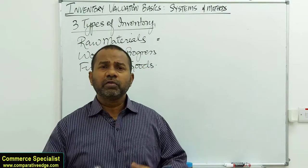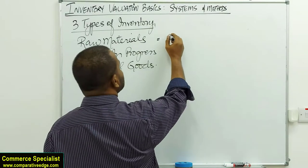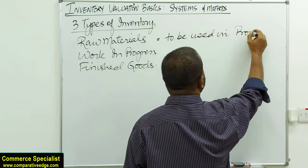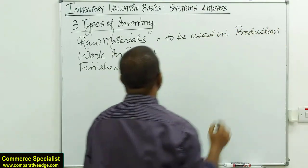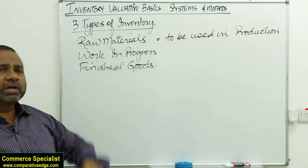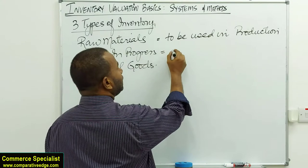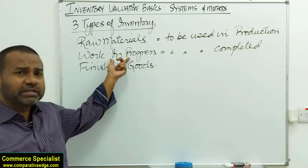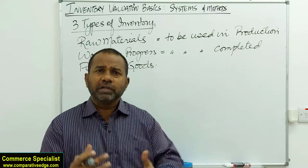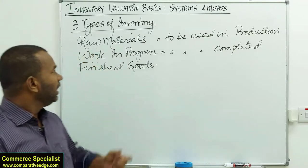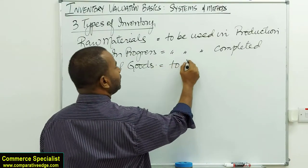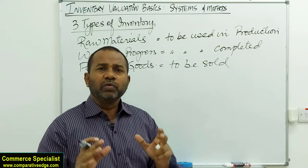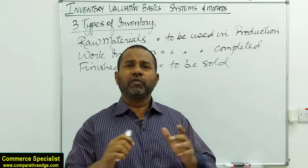Inventory of raw material means it is available to be used in production. Inventory of work in progress is to be completed — it's in progress, it's incomplete, we need to complete it further. Inventory of finished goods means the inventory is already finished and waiting for its buyer.